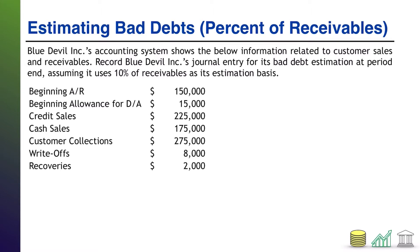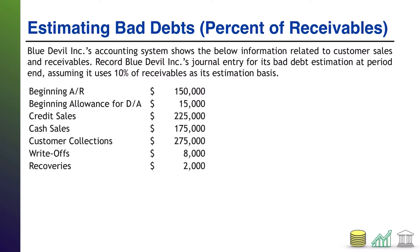Whenever we are going to estimate bad debts based on a percent of receivables, we first have to know how much we actually have in receivables when the period comes to an end. Typically the easiest way is to go ahead and establish an AR ledger. Beginning AR was $150,000; since this is an asset, that's going to be on the debit side. The next information we have is beginning allowance for doubtful accounts — we don't need that to come up with our AR balance, so we can ignore that for now. We had credit sales of $225,000.